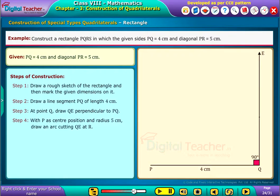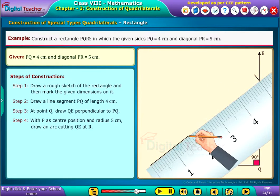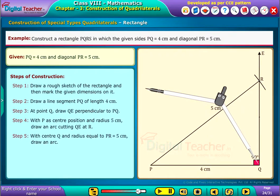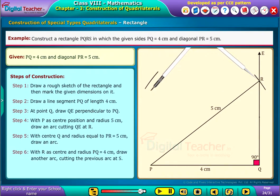Step 4: With P as center and radius 5 centimeters, draw an arc cutting QE at R. Step 5: With center Q and radius equal to PR equals 5 centimeters, draw an arc.